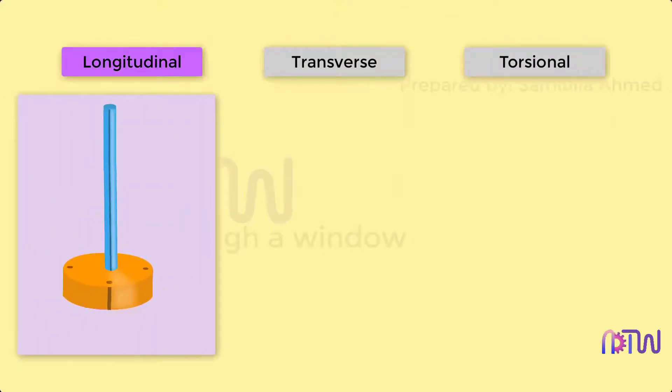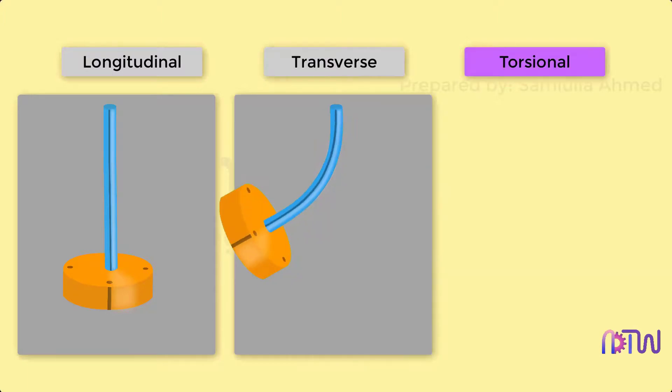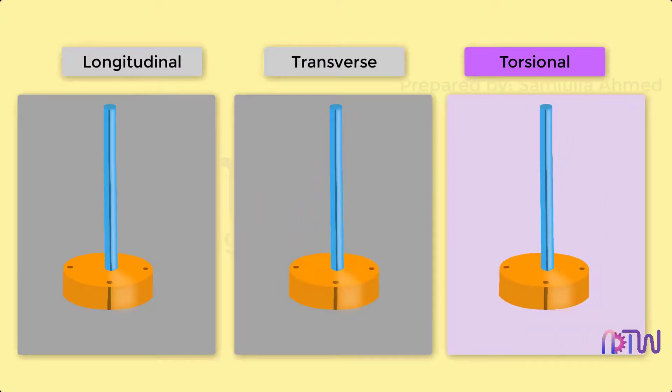Longitudinal vibrations: In this, the particles of the shaft or disc move parallel to the axis of the shaft. Here the shaft is twisted and untwisted alternatively, and hence torsional shear stress is induced in the shaft.